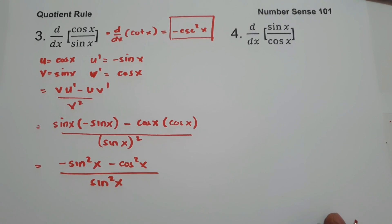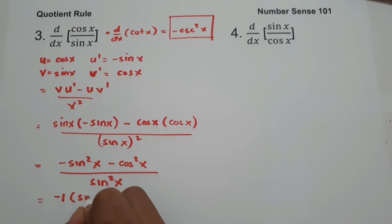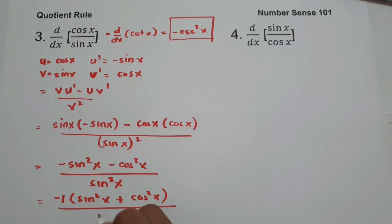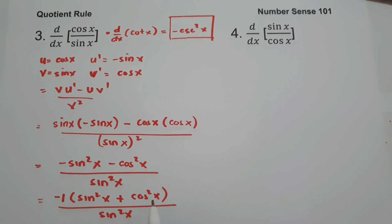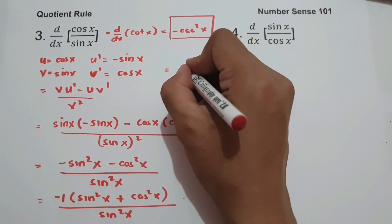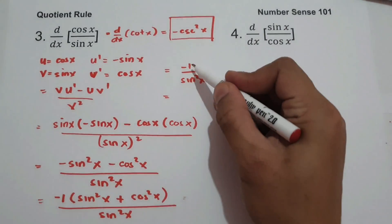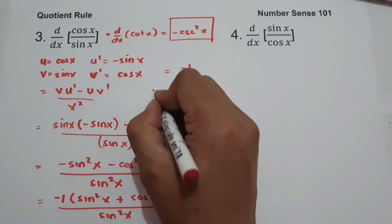Using the Pythagorean identity, sine squared x plus cosine squared x equals 1. So the numerator becomes negative 1 over sine squared x. The identity of negative 1 over sine squared x is negative cosecant squared x. This confirms our answer, and we arrive at the same result.